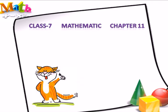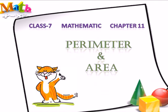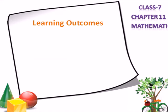Class 7, Maths, Chapter 11, Perimeter and Area. Learning Outcomes.